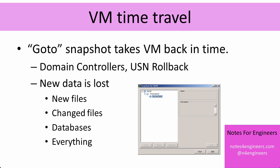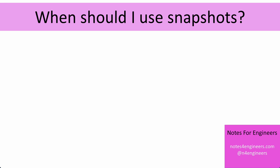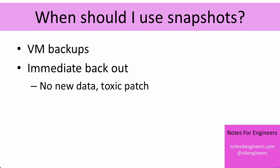So having told you that snapshots can cause data stores to fill up, every virtual machine to stop, and can cause problems with data inside your virtual machines — why would you then use snapshots? Well, there are three primary reasons. The first one is virtual machine backups. Pretty much all virtual machine-aware backups work by snapshotting virtual machines. The second thing is that you sometimes use them as a back-out if you're applying updates to virtual machines and you're afraid that one of them is going to cause a catastrophic failure.